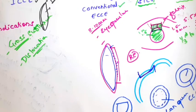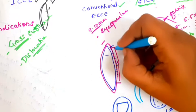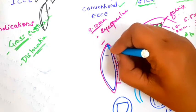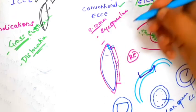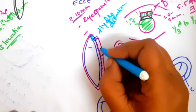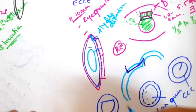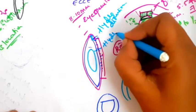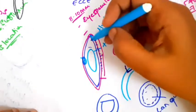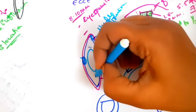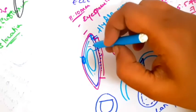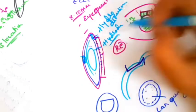Now you inject fluid — this is called hydrodissection — injected just below the anterior capsule, between the lens capsule and the lens. There is also hydrodelineation, where fluid is injected between the lens cortex and the nucleus. In posterior polar cataracts where you expect weakness of the posterior capsule, you inject fluid between the lens cortex and nucleus to leave behind a plate of cortex to protect the posterior capsule — that is hydrodelineation.